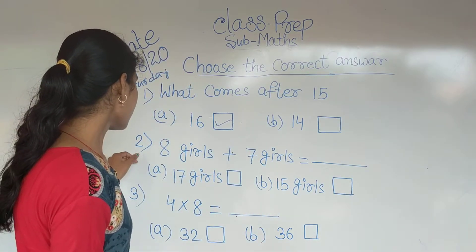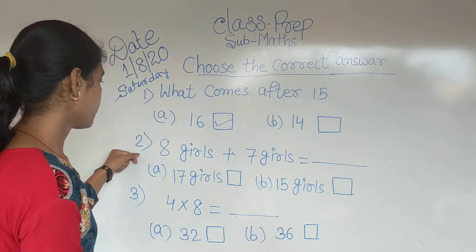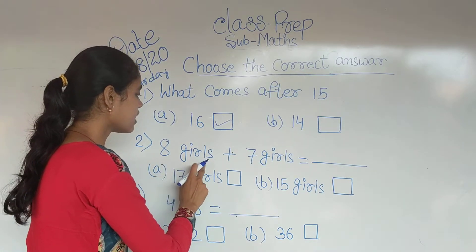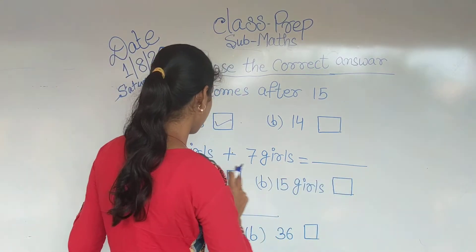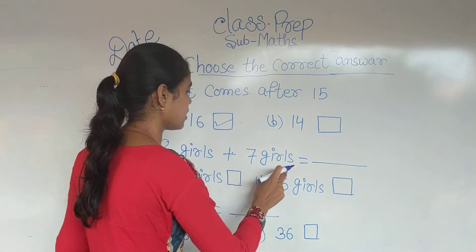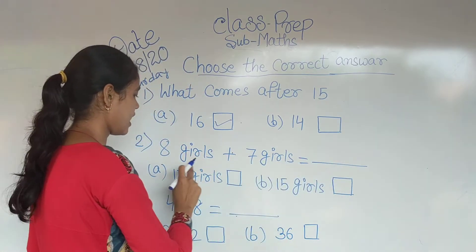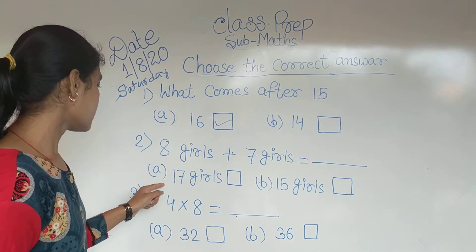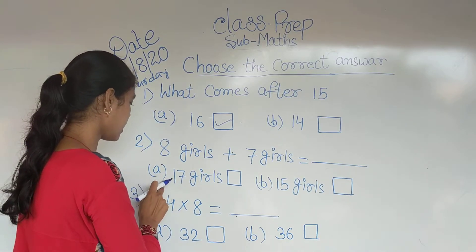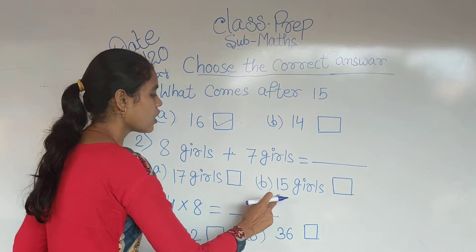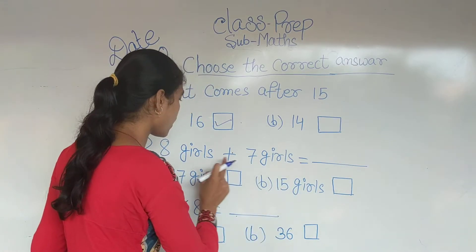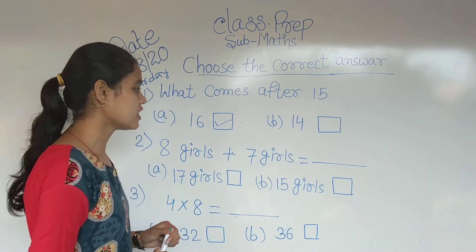Okay, next. Number 2: 8 girls plus 7 girls equals this. 8 plus 7 equal kitna hoga? Neeche likha hai option mein. Option A: 17 girls. Option B: 15 girls. Hum isko add karke pehle dekhna hai kitna hota hai.